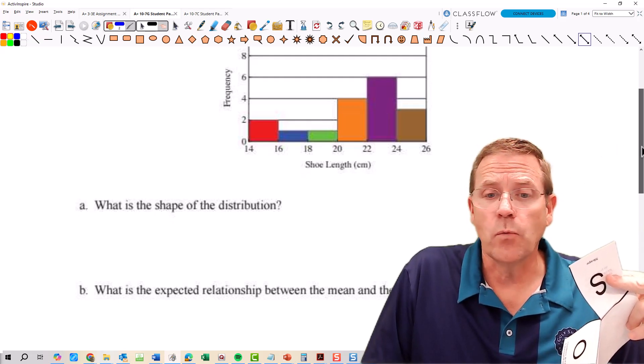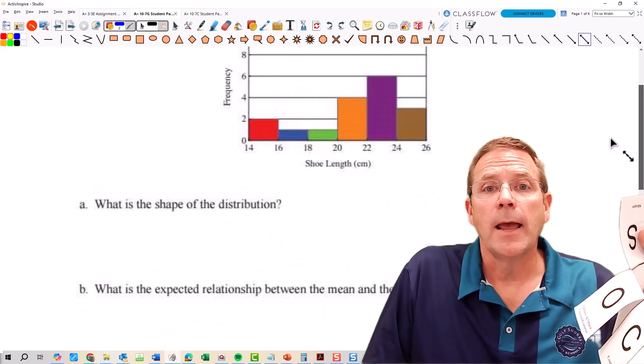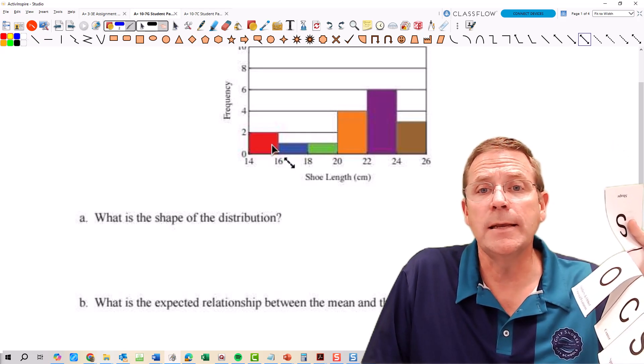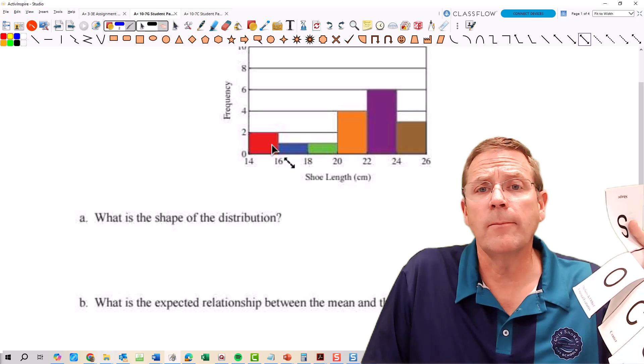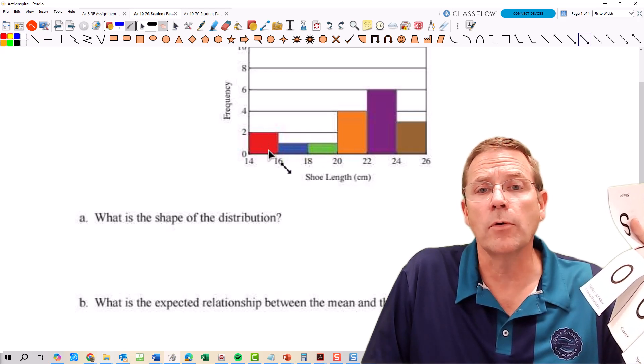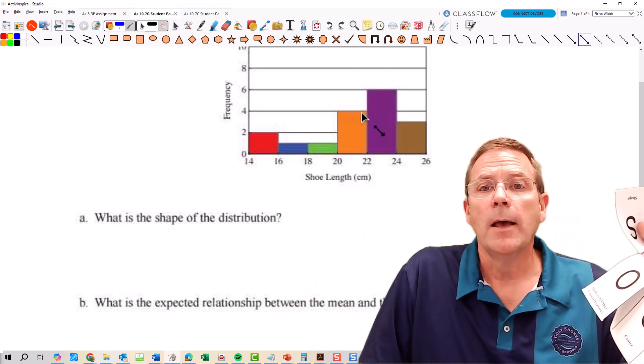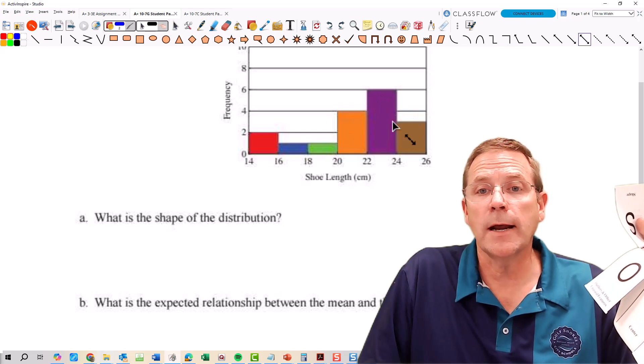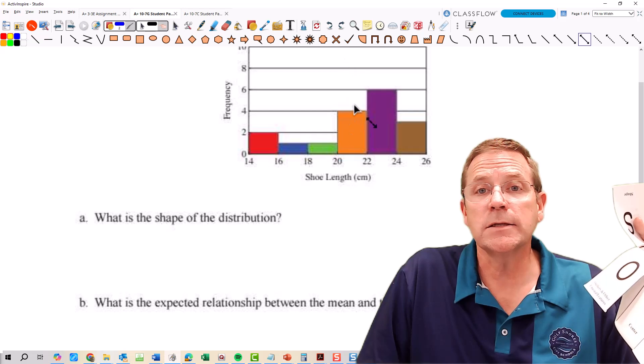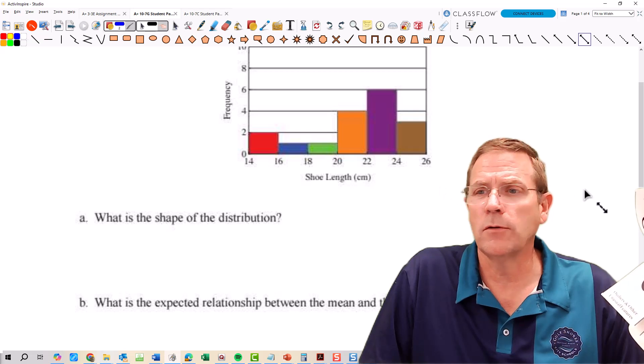Next question is what is the expected relationship between the mean and the median? And my expected relationship here is going to be that the mean is going to be lower than the median. Because you have these handful of really low numbers that are going to pull that mean to the left hand side, pull it down. Meanwhile the majority of the data values are up here in these bigger numbers, meaning the median itself, your middle value, that's going to be somewhere around probably the 20 to 22 range.